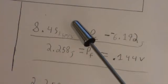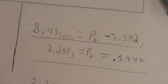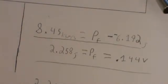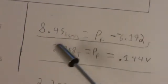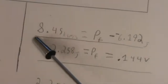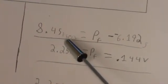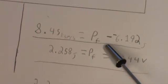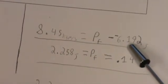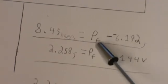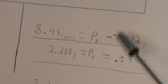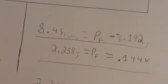We know that the equation is: change in momentum equals final momentum minus initial momentum. So 8.45 is the change — that equals the final momentum minus the initial. We don't know the final; we're trying to figure out the velocity there. And since we're subtracting a negative, it becomes positive.